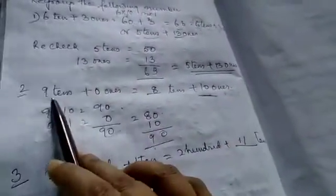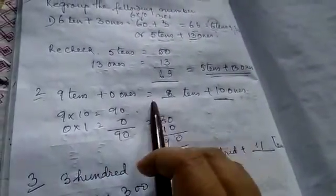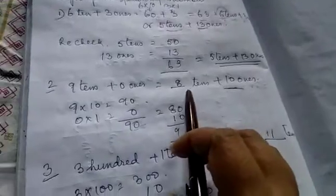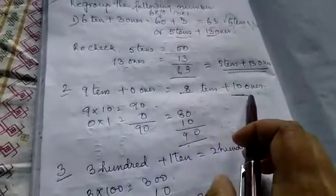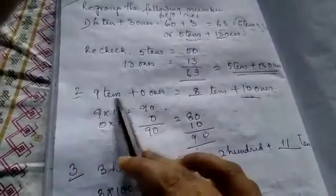First you come here and you see 9 tens 0 ones. In your question it is given 0 tens plus 10 ones. 9 tens 0 ones.